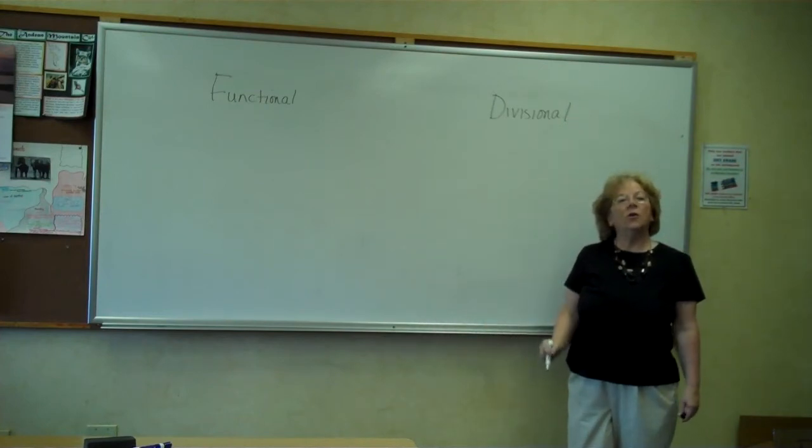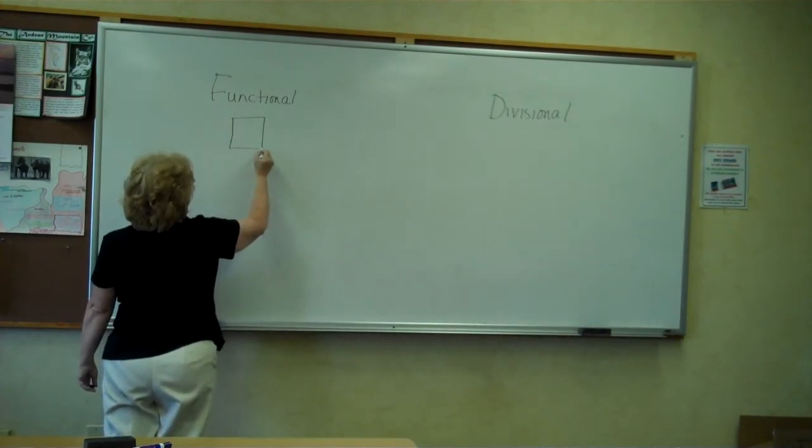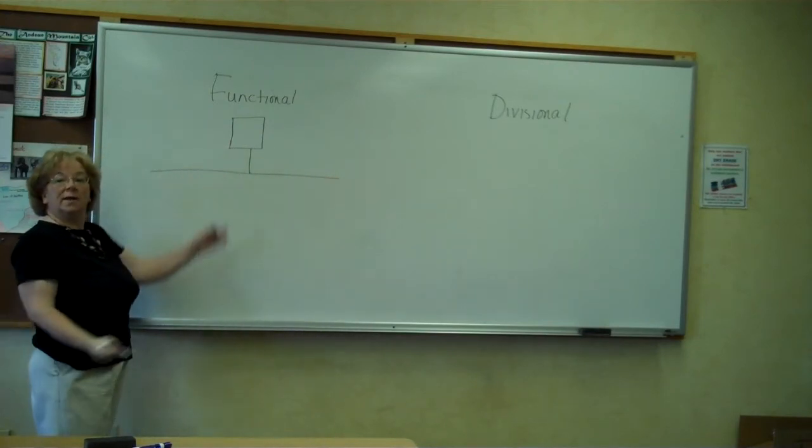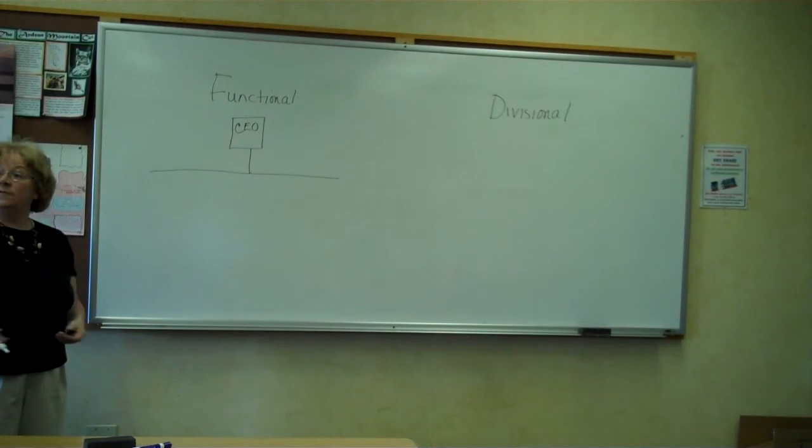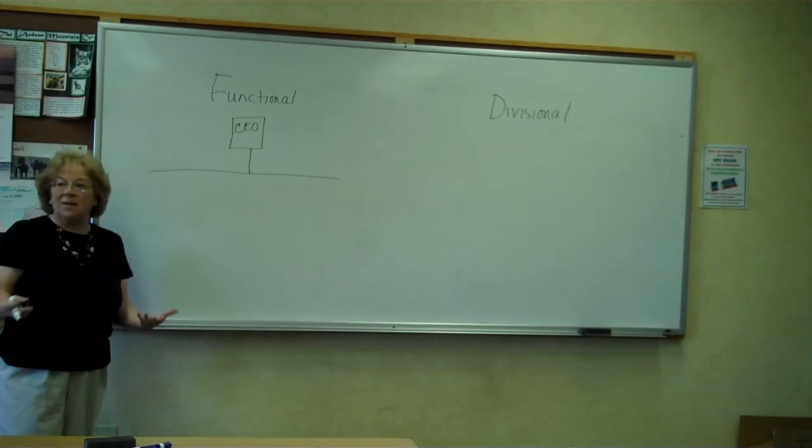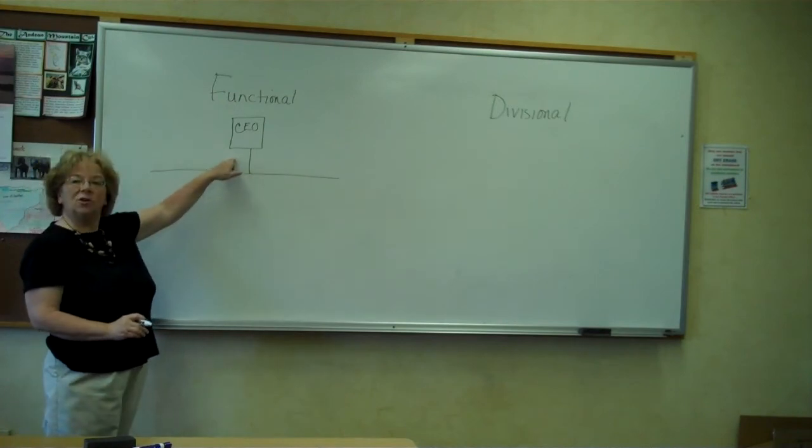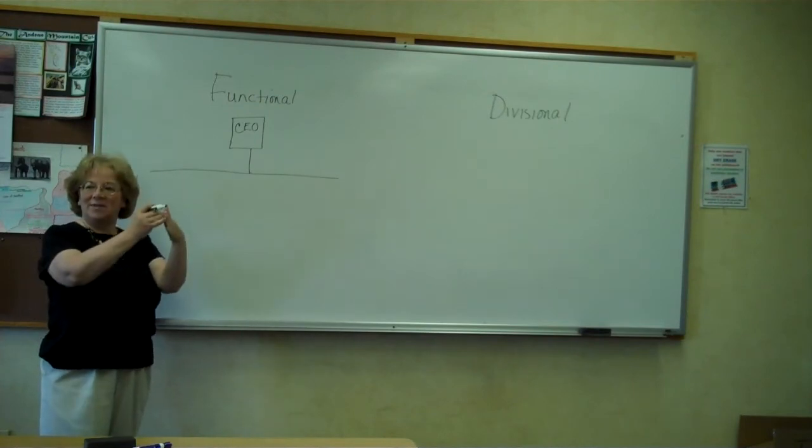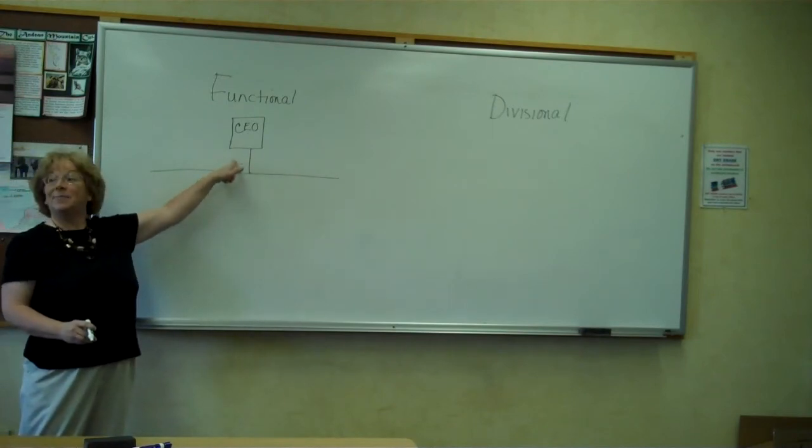A functional structure would look like this. This individual is the CEO, stands for Chief Executive Officer. This individual might go by other titles: President, Manager, Chief Operations Officer. But at any rate, this is the individual who is in charge of the whole business. Everything reports up to this individual, or as President Franklin Delano Roosevelt said, the buck stops here.